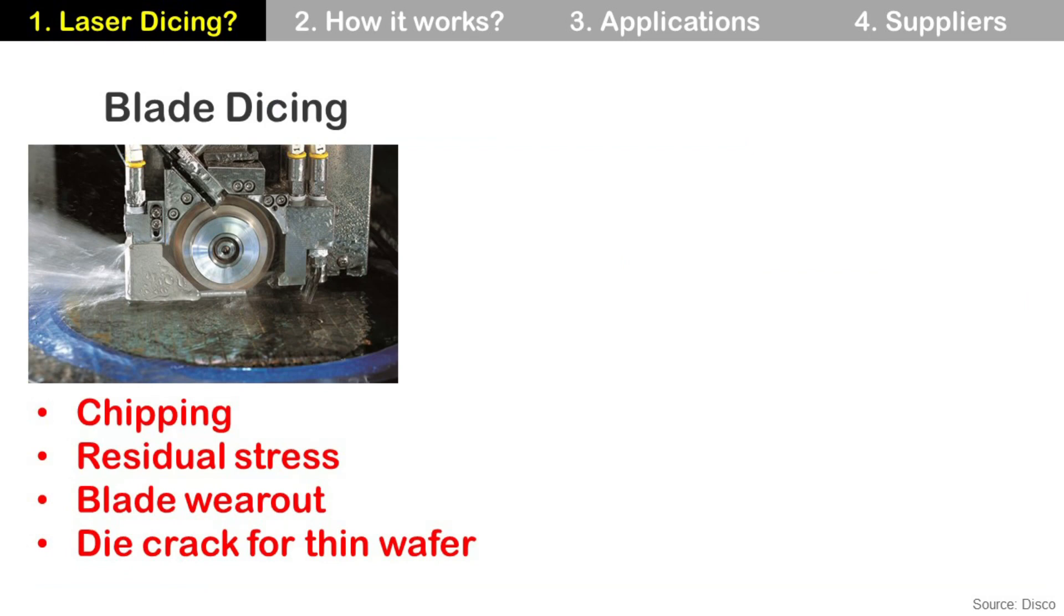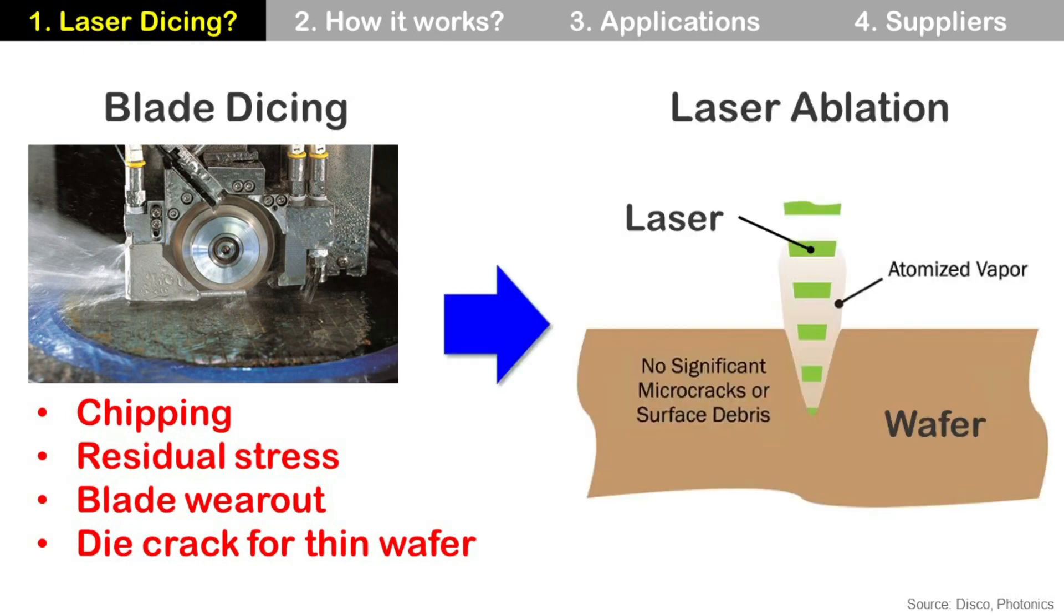Let's talk about the second one: laser dicing using ablation. Why do we need it? Current blade sawing has some problems including chipping, residual stress, blade wear out, and die crack for thin wafer. But laser ablation can solve these problems without mechanical contact.